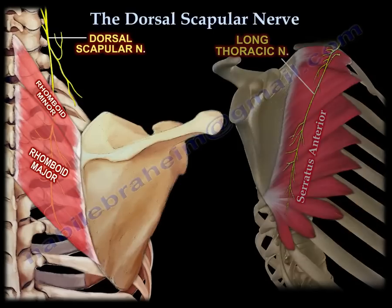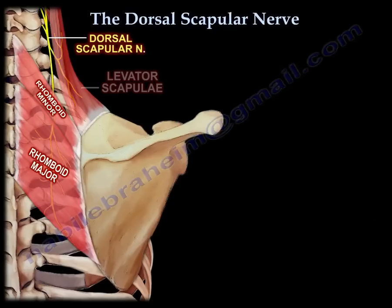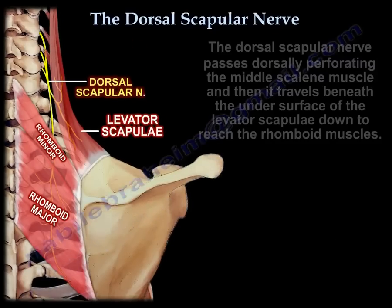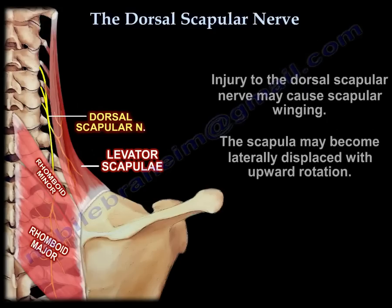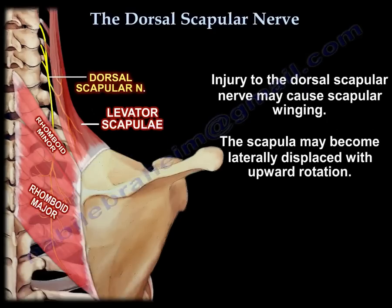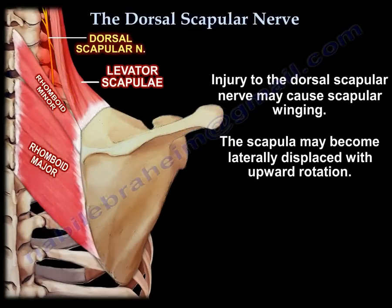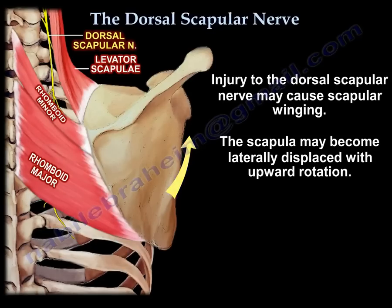The dorsal scapular nerve passes dorsally, perforating the middle scalene, then travels along the undersurface of the levator scapulae down to reach the rhomboids. With injury to the nerve, you will get scapular winging, and the scapulae may be laterally displaced with upward rotation.